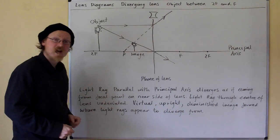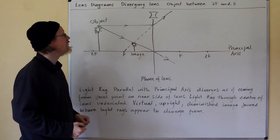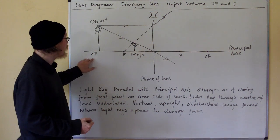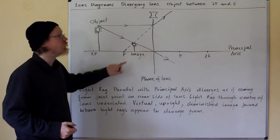Hi. Lens diagrams, diverging lens, object between twice the focal length and the focal length.